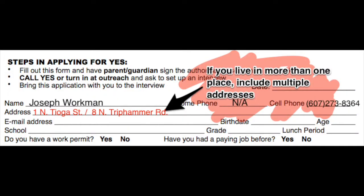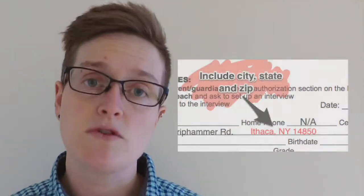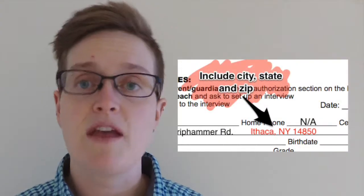If you live at more than one address, write down both of your addresses. Or if you live someplace but receive mail someplace else — like if you have a P.O. box for example — write down both addresses where you live and where you receive mail.